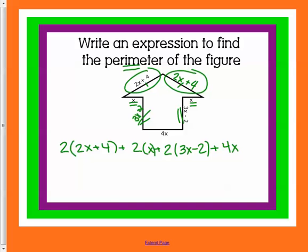So I have 2 of those plus 2 of these x's plus 2 of these 3x minus 2's plus 4x. Take a second, copy that down, and see if you can solve this. Here's a hint. You already know the distributive property. Use that to make your life easier.